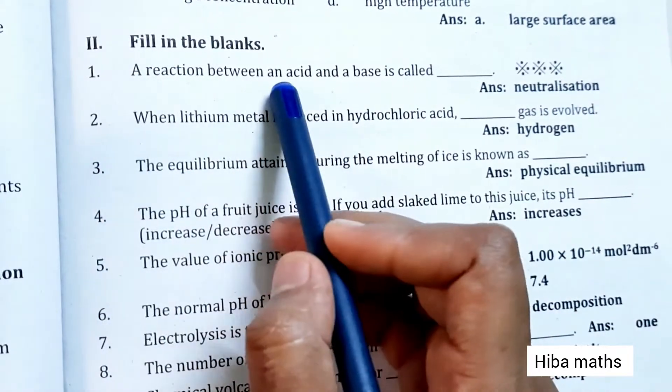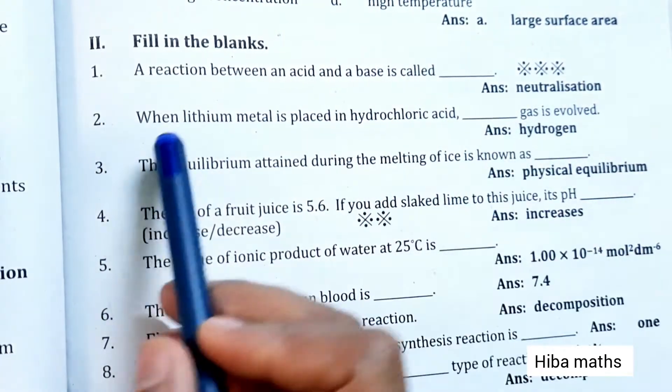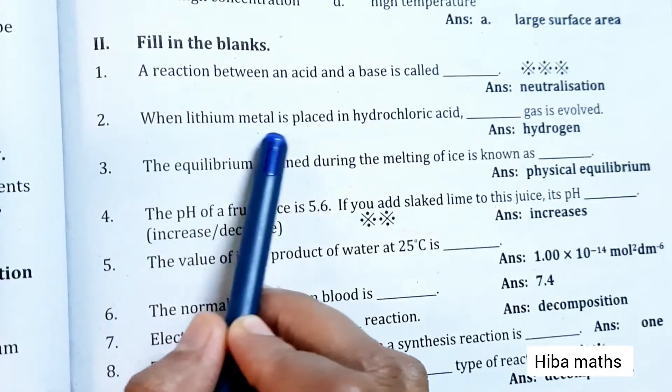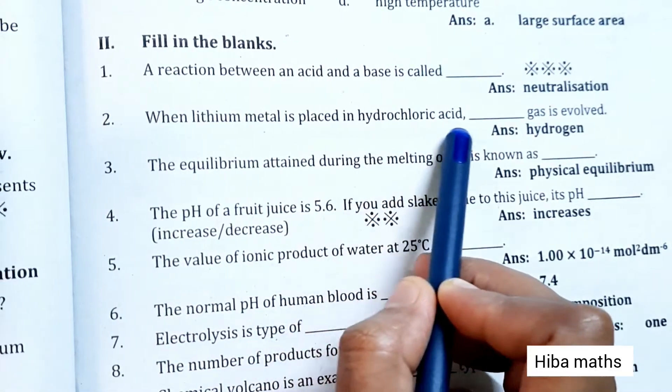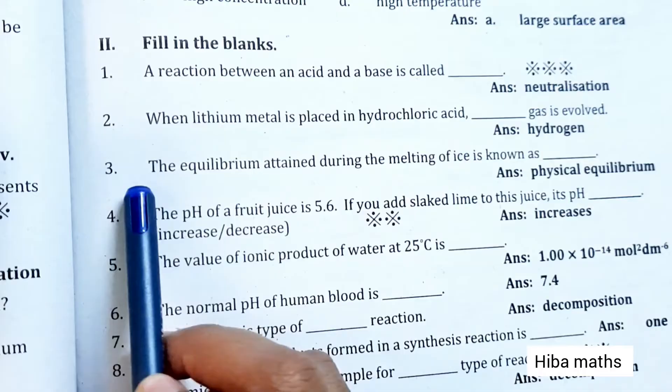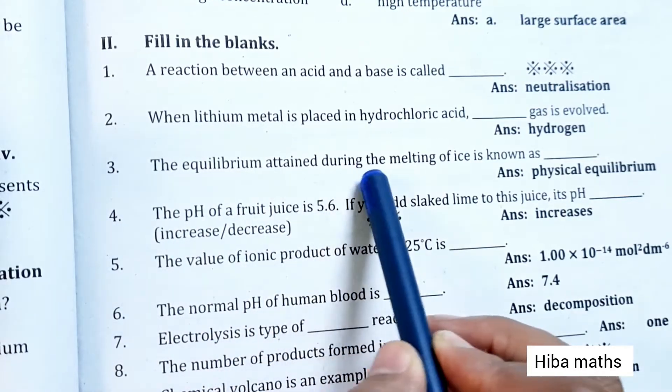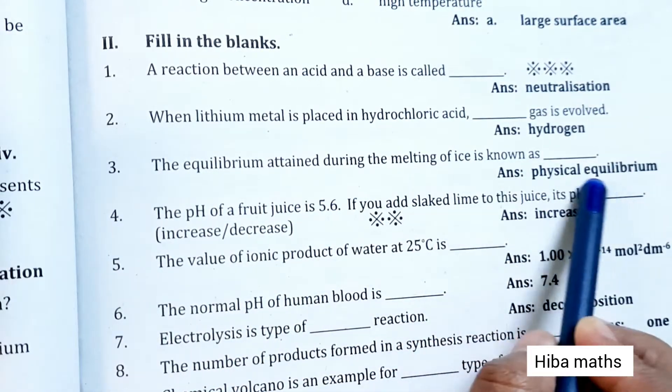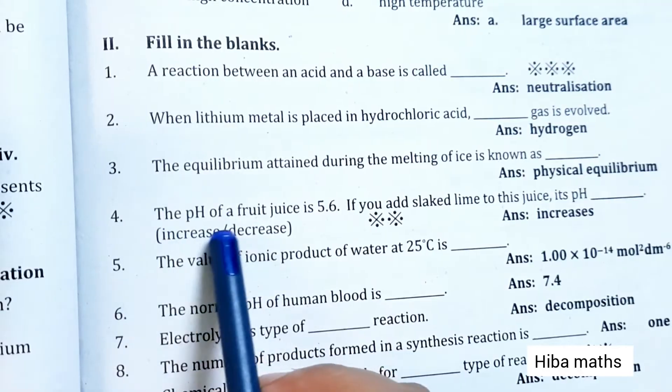Fill in the blanks: A reaction between an acid and base is called neutralization. When lithium metal is placed in hydrochloric acid, hydrogen gas is evolved. The equilibrium attained during the melting of ice is known as physical equilibrium.